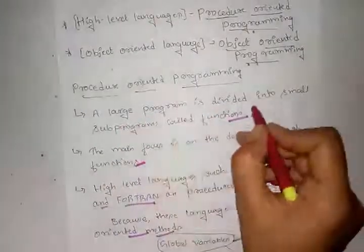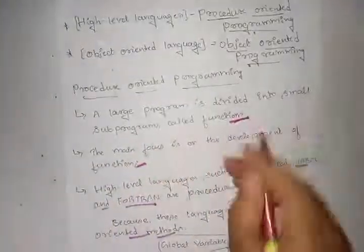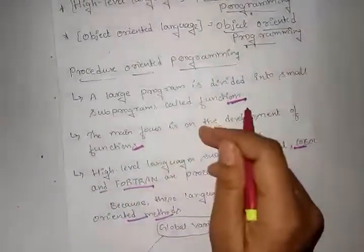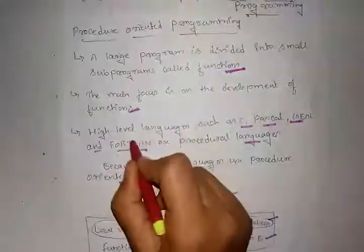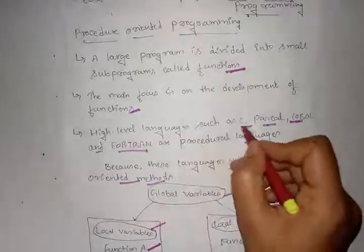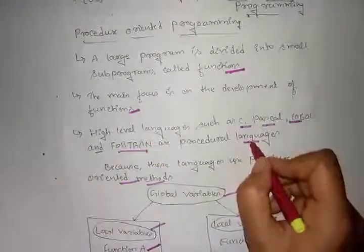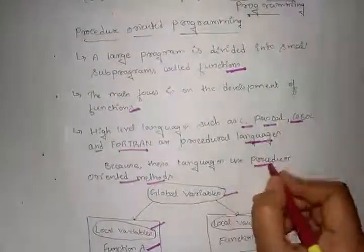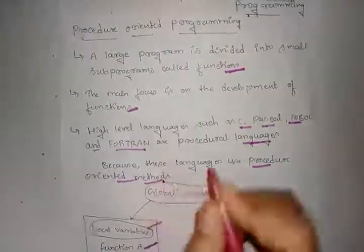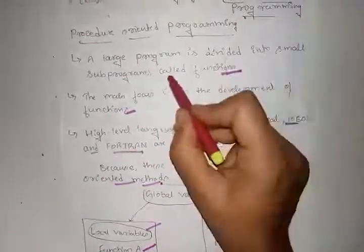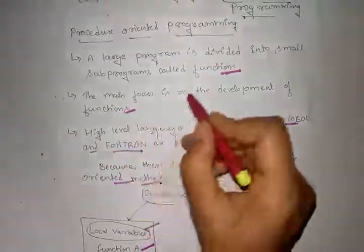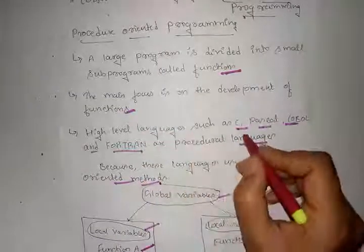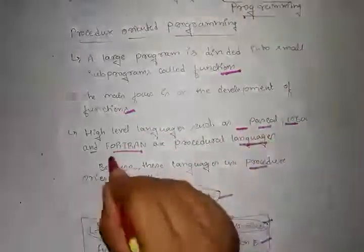In procedure oriented programming, a large program is divided into small subprograms called functions. The main focus is on the development of functions. High level languages such as C, Pascal, COBOL, and FORTRAN are procedural languages because these languages use procedure oriented methods.